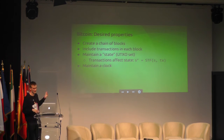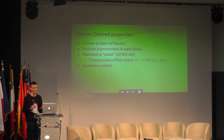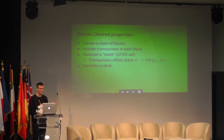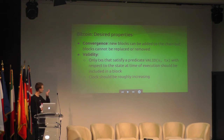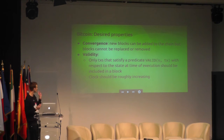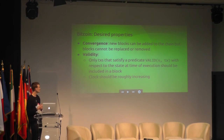Another smaller function of Bitcoin that does still technically exist is to maintain a clock. Blocks contain timestamps and these timestamps are supposed to, at least within some bound, reflect reality. From a very low level standpoint, these are properties we want the Bitcoin blockchain to have. You can think of the properties in terms of convergence: a perfect ideal convergence says that new blocks get created and added onto the existing chain, but blocks do not get replaced and do not get removed.